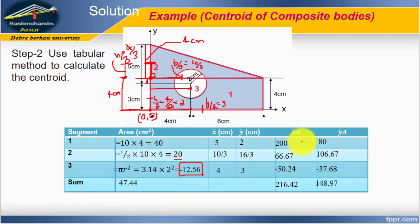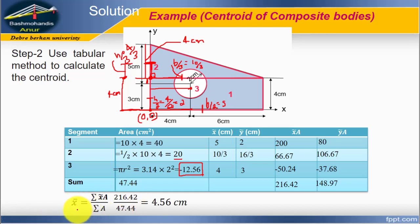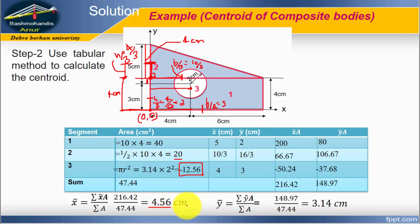Now we place the summation row in the table: summation of area equals 47.44, summation of x̃ times area equals 216.42, and summation of ỹ times area equals 148.97. Finally, x̄ equals the summation of x̃ times area divided by summation of area, giving x̄ equals 4.56 cm. And ȳ equals summation of ỹ times area divided by summation of area, giving ȳ equals 3.14 cm.